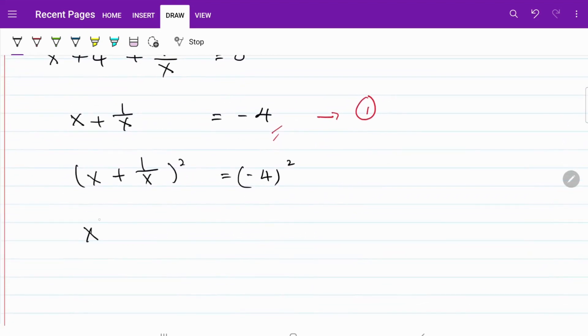This becomes x squared plus 2x times 1 over x plus 1 over x squared. And that's equal to negative 4 squared, which is equal to 16.